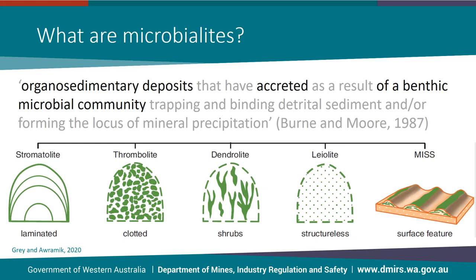Microbially induced sedimentary structures, or MISS, are quite different in their appearance to the first four subsets and generally found in different stratigraphic settings. Whilst the first four subsets are usually found in carbonate-dominated regimes, MISS are features found on bedding planes, commonly in clastic settings. But when we adopt this broad definition of microbialites as deposits that form as a result of a benthic microbial community, they do fit here as a fifth subset.